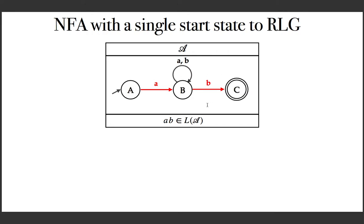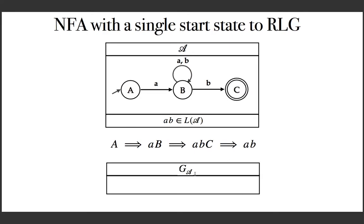To accept this string, we need this kind of derivation in the grammar. From the start symbol A, we first derive small 'a' followed by capital B. Then B is replaced with small 'b' followed by C, generating this sentential form. Finally, C is replaced with epsilon and we generate 'ab'. Now the question is how to generate the grammar G_A. What we did is take the first transition going from state A to state B and say that variable A is replaced with small 'a' capital B.